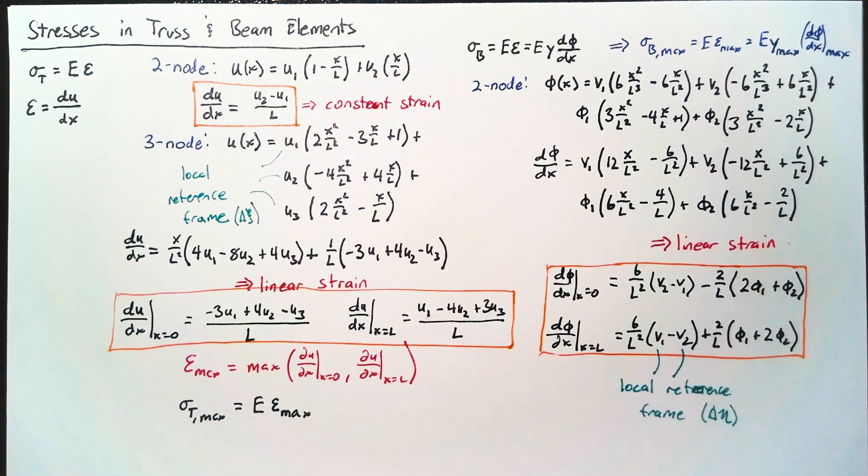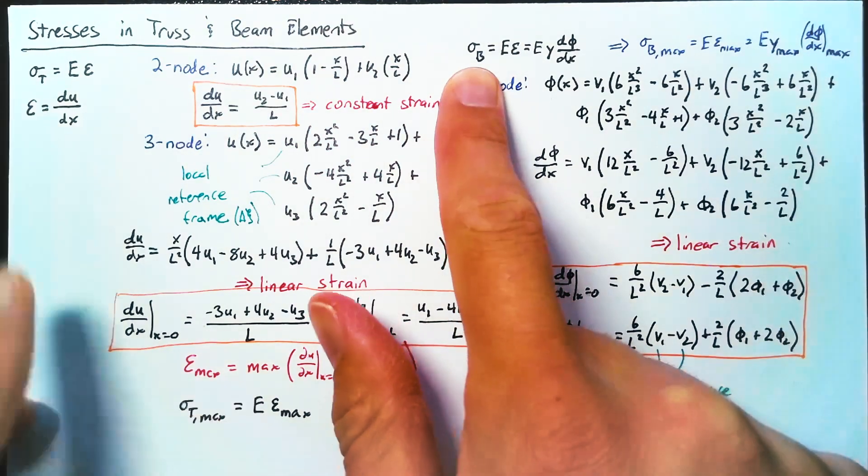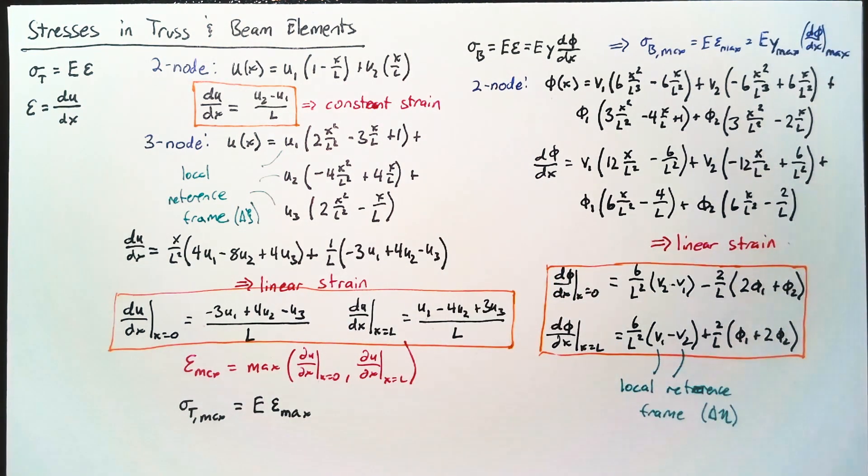And then we use that in order to calculate either sigma t or sigma b. And if you remember our frame elements, which are our two-dimensional beam and truss together elements, those would have both a sigma t component and a sigma b component. So we would need to account for both of those whenever we're finding the maximum stress. And just be careful of your signs whenever you're doing that. In any case, that about covers it for finding these stresses. I hope it was helpful, and I will catch you next time.